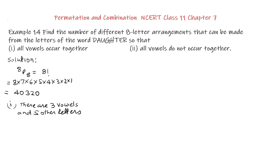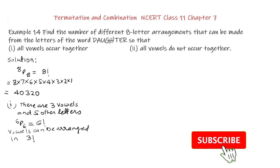So we have to find if all the vowels are kept together, then this will make 6P6. This is going to give us 6 factorial. And the vowels themselves can be arranged in factorial 3 ways as there are 3 vowels.